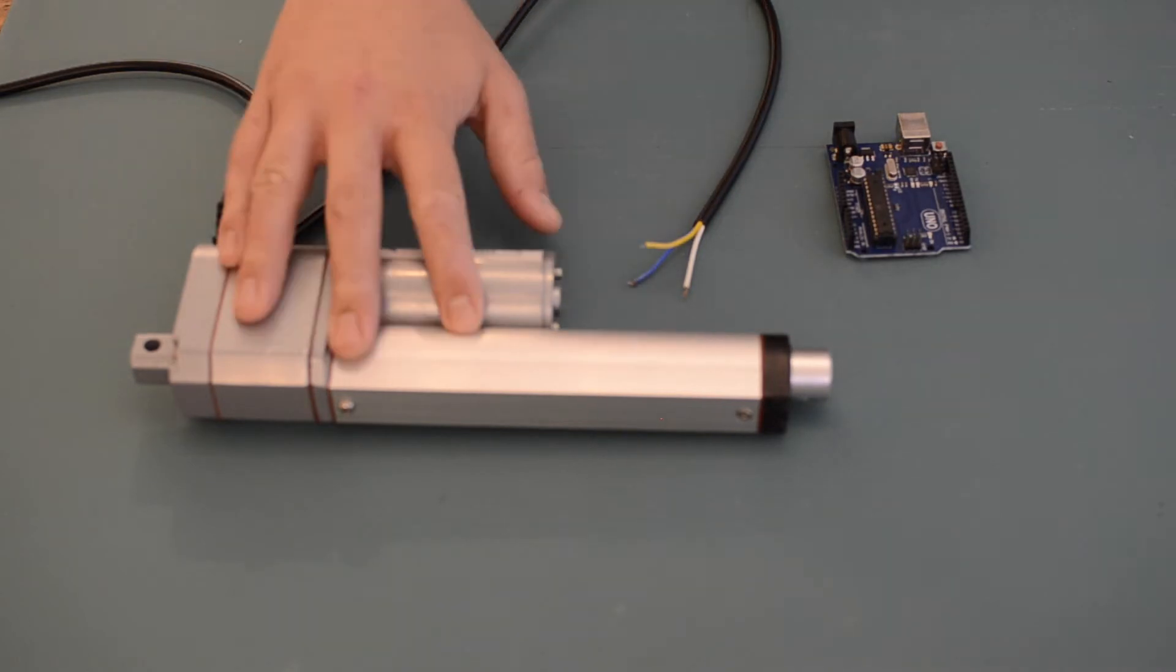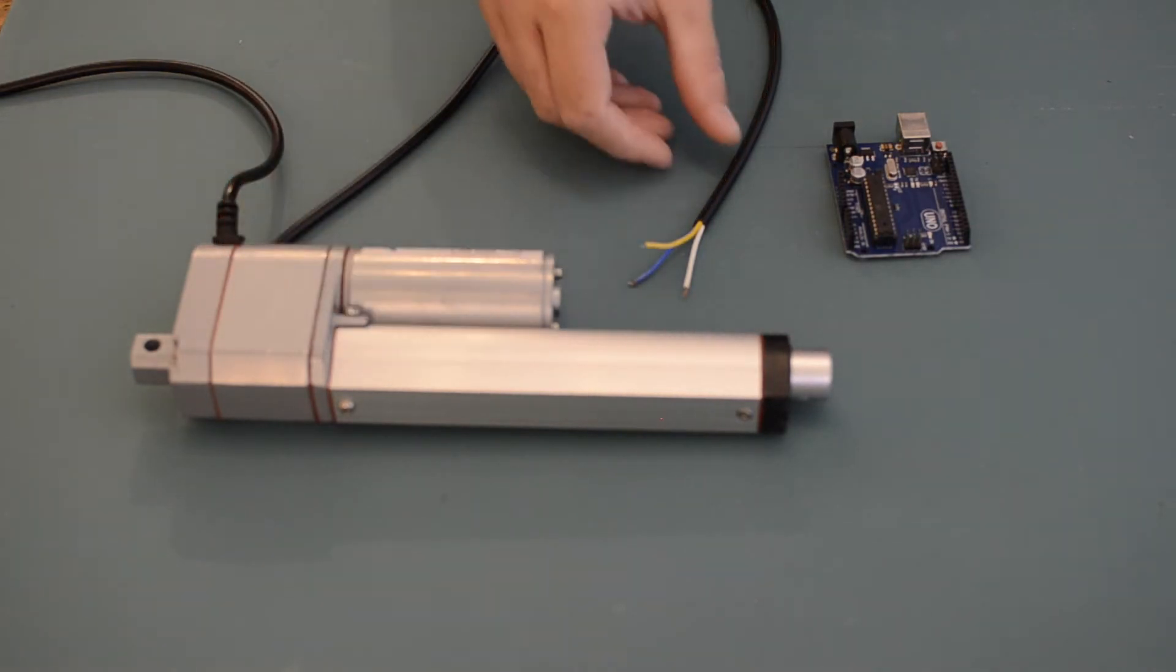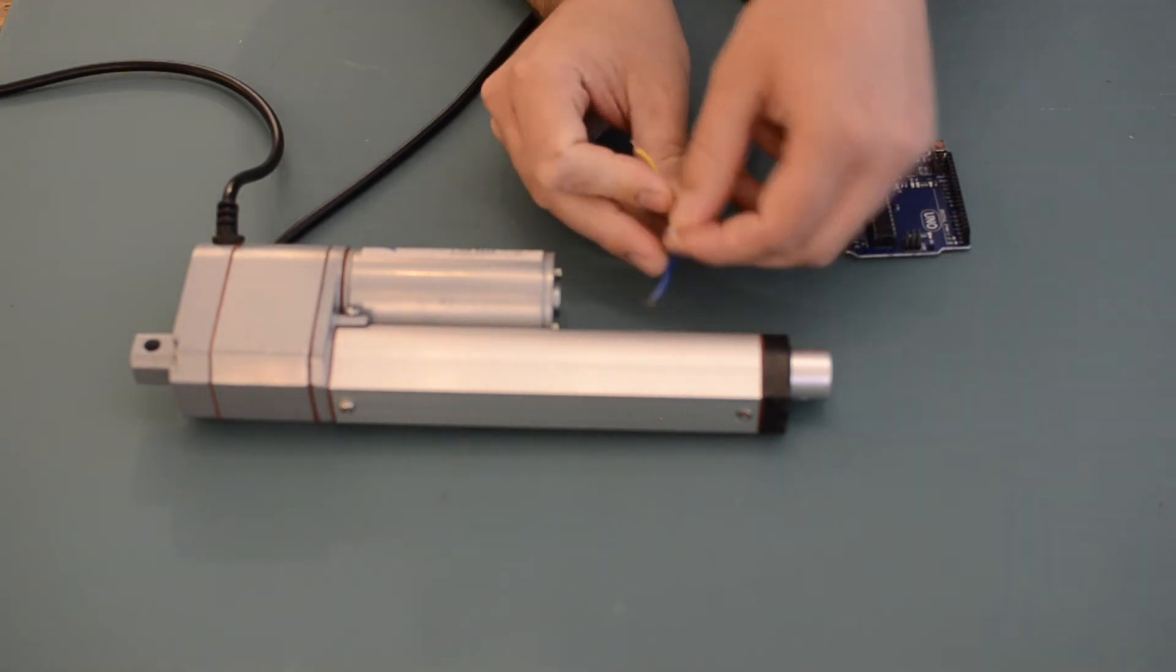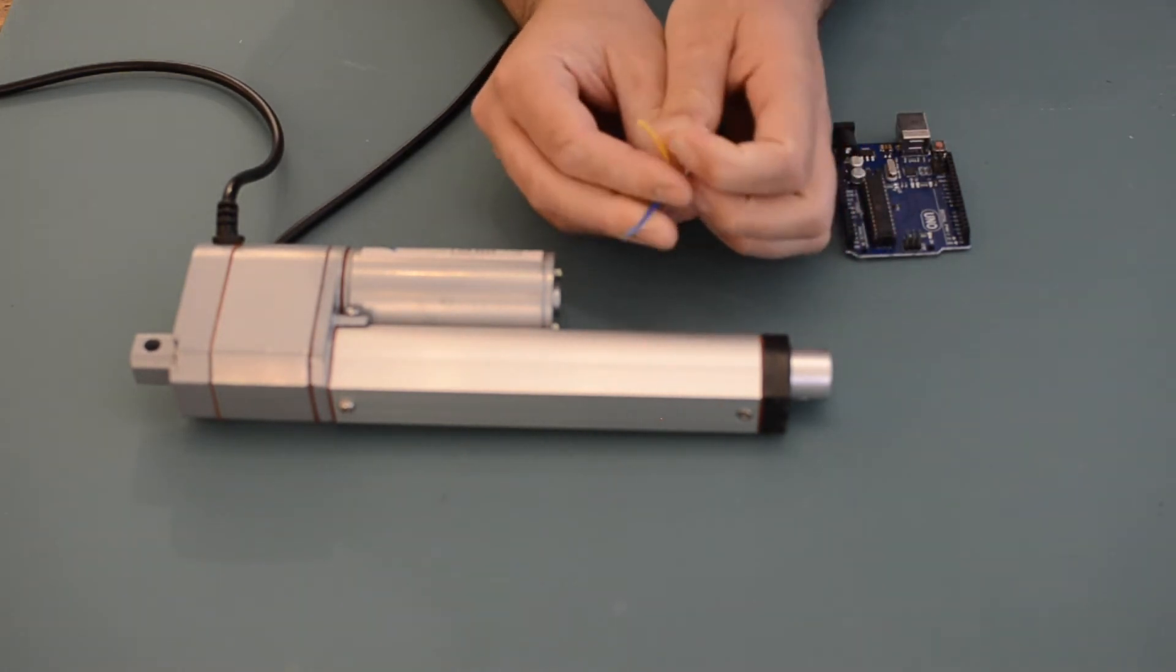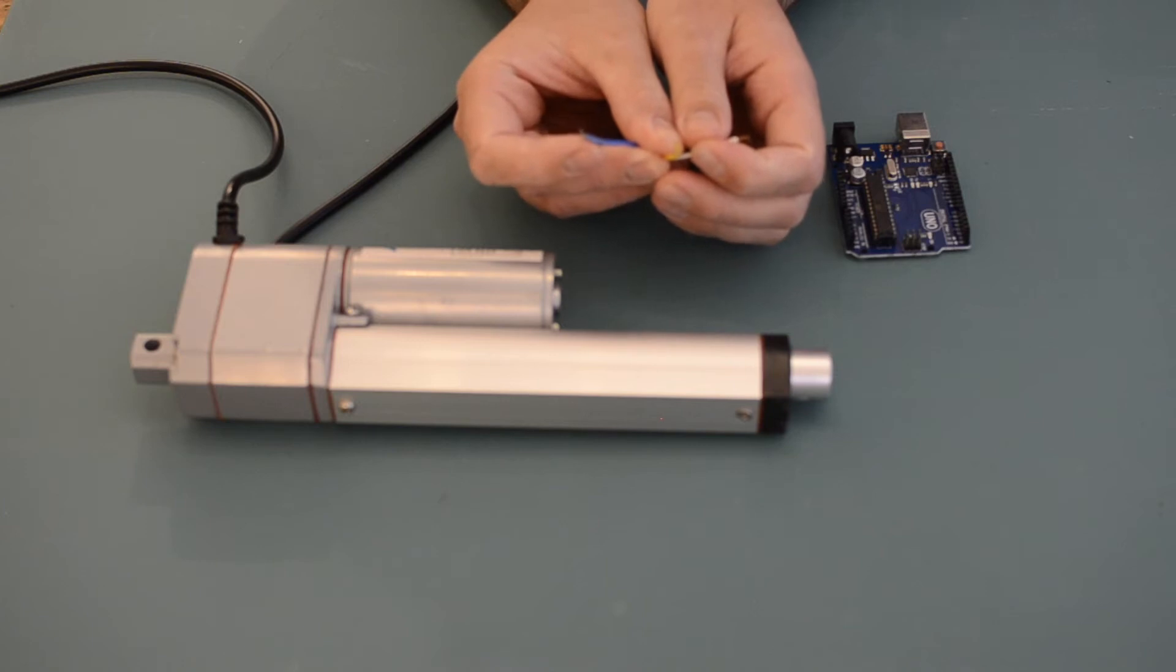If your linear actuator has a potentiometer, you'll have three additional wires: one for input voltage, one for ground, and the other would be the output of the potentiometer.